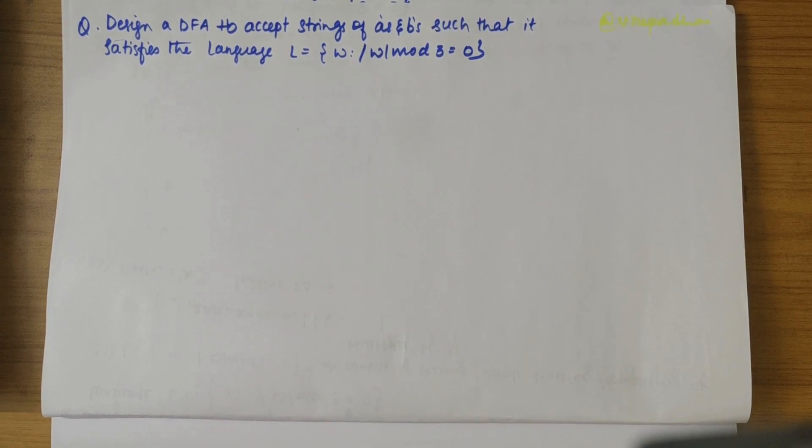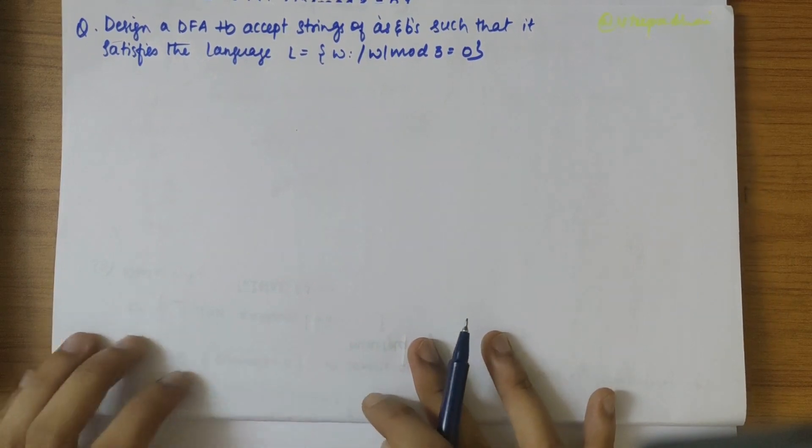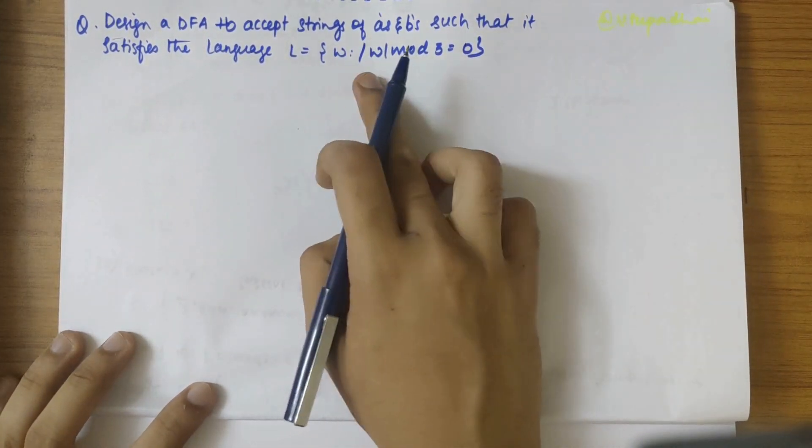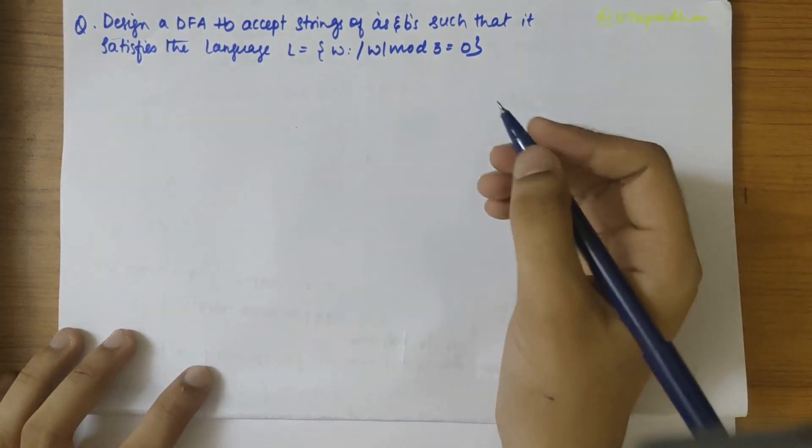In this video, we'll be designing a DFA to accept strings of A's and B's such that it satisfies the language L equals W where W mod 3 equals 0.